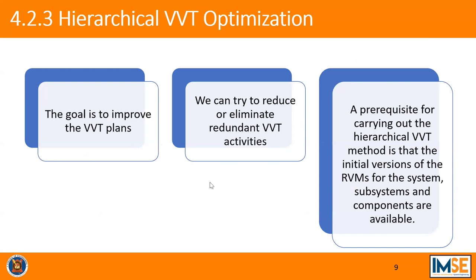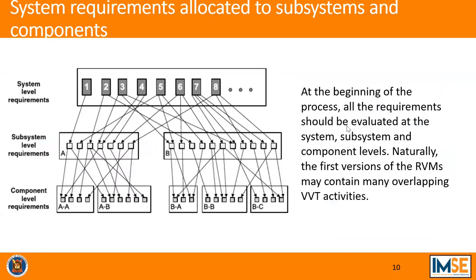Now, hierarchical VPT optimization. It is required to improve the VPT plans. It is possible to reduce or eliminate redundant or repetitive VPT activities so that cost is minimal. For VPT optimization, initial RVMs of the system, subsystem, and components are a prerequisite. From this diagram, we can see the system level requirement is allocated to subsystem A and then further allocated to components AA and AB.